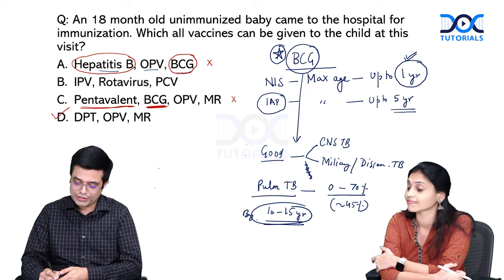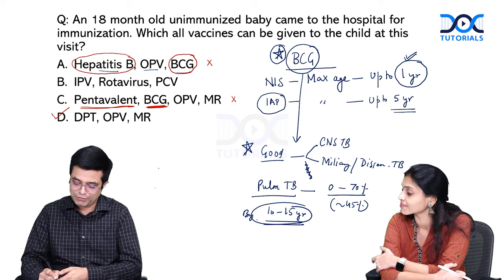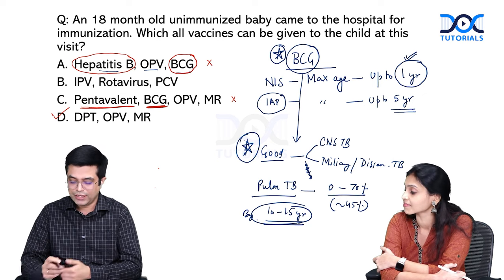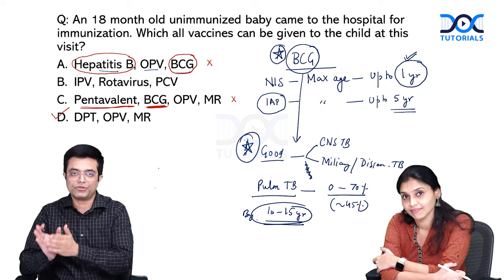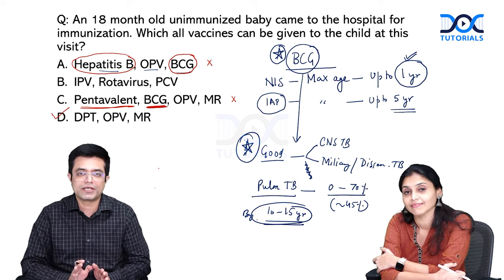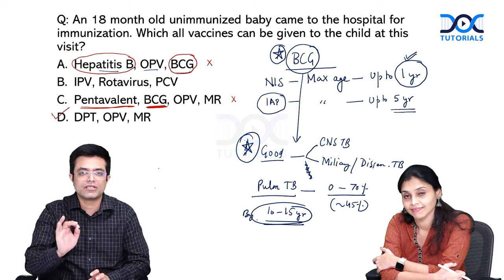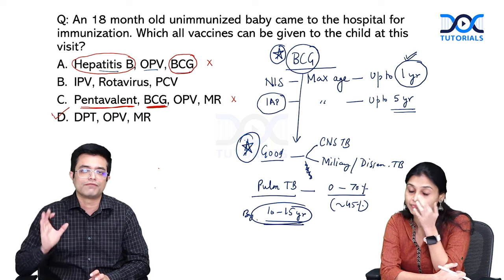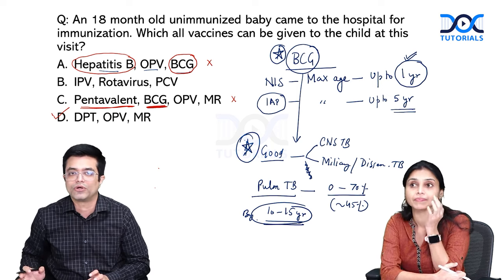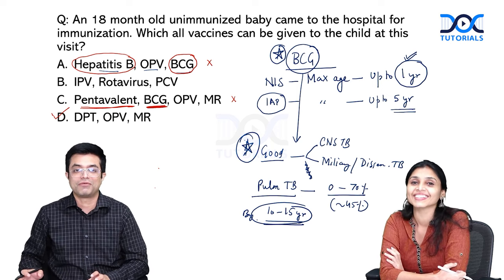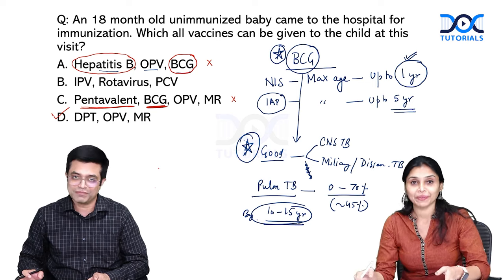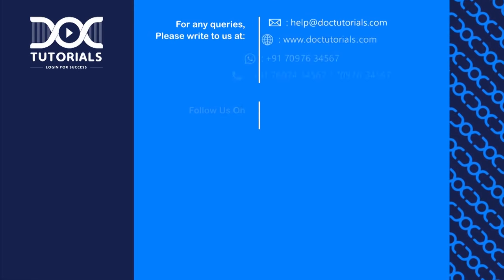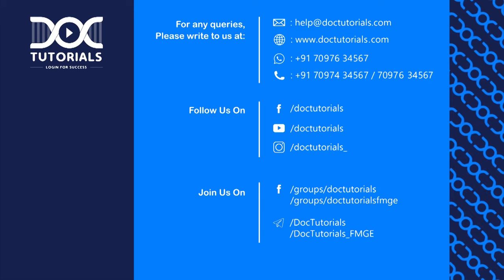BCG was devised for pulmonary TB but actually provides better protection against the more severe forms. Questions have been asked on these controversial areas. For all practical purposes, stick to the National Immunization Schedule. Thank you very much.